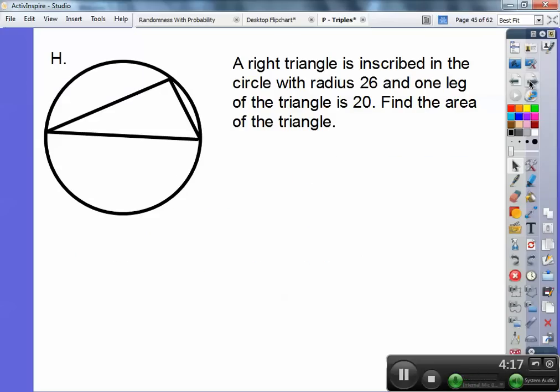Okay, let's try another one. Got a right triangle inscribed in a circle with radius 26 and one of the legs of the triangle is 20. Find the area. All right, let's put some lengths in there. The radius is 26 and there's that leg right there. That's 20. And so if the radius is 26, the whole diameter is going to be 52, 2 times 26.